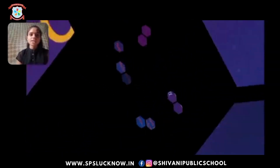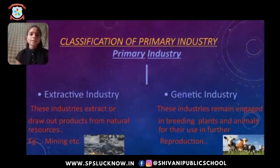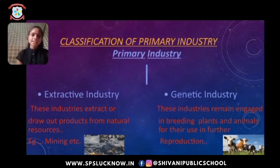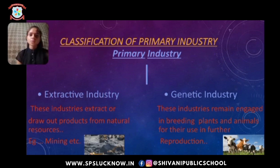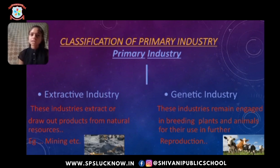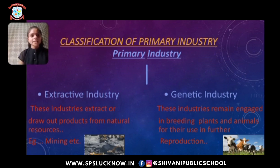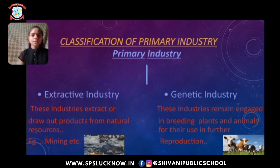Next is the classification of primary industries. Primary industries are classified into two main parts: extractive industries and genetic industries. Extractive industries extract or draw out products from natural resources — for example, mining. Genetic industries remain engaged in breeding plants and animals for their use in further reproduction; they mainly involve breeding of animals and plants.